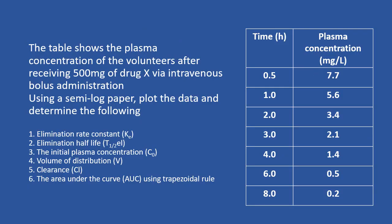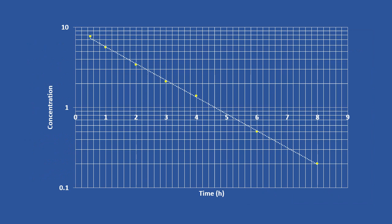This next question is very similar to the previous one, except you have to calculate the area under the curve using the trapezoidal rule. Pause the video and try the question. This is the graph you should get. By calculating the gradient of the straight line you can find the elimination rate constant, and by extrapolating the line to the y-intercept you can find the initial drug concentration.